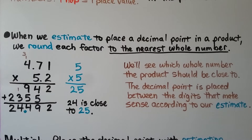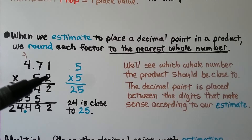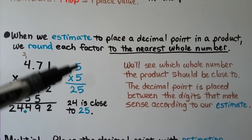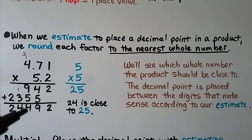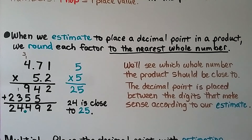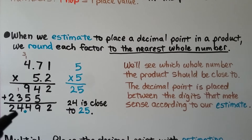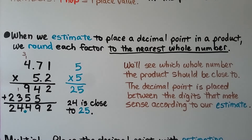When we estimate to place a decimal point in a product, we round each factor to the nearest whole number. We have 4 and 71 hundredths — the 7 tells the 4 to round up to 5. We have 5 and 2 tenths — the 2 tells the 5 to stay at 5. Five times five is twenty-five, so we know the answer is going to have a whole number around twenty-five. We multiply and get the digits 2, 4, 4, 9, 2. To be close to twenty-five, the decimal point goes here — giving us twenty-four whole, which is close to twenty-five.